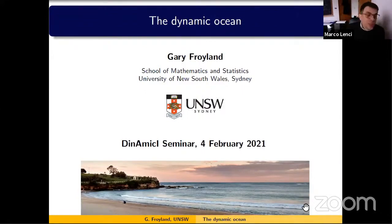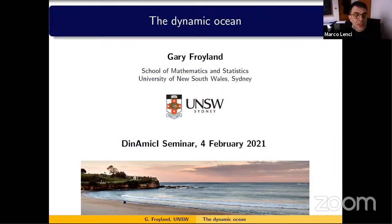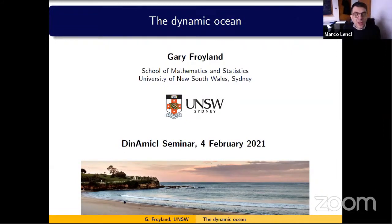Gary Froyland is a professor of mathematics in the School of Mathematics and Statistics at the University of New South Wales, Sydney. He's a fellow of the Australian Academy of Science, the Royal Society of New South Wales, and the Australian Mathematical Society. He has received many awards for both his research and his teaching, and has been the recipient of a large number of research grants on different mathematical subjects, from pure mathematics to computation and applications to industry and other scientific disciplines. I'm absolutely delighted to introduce Gary Froyland — the floor is yours.